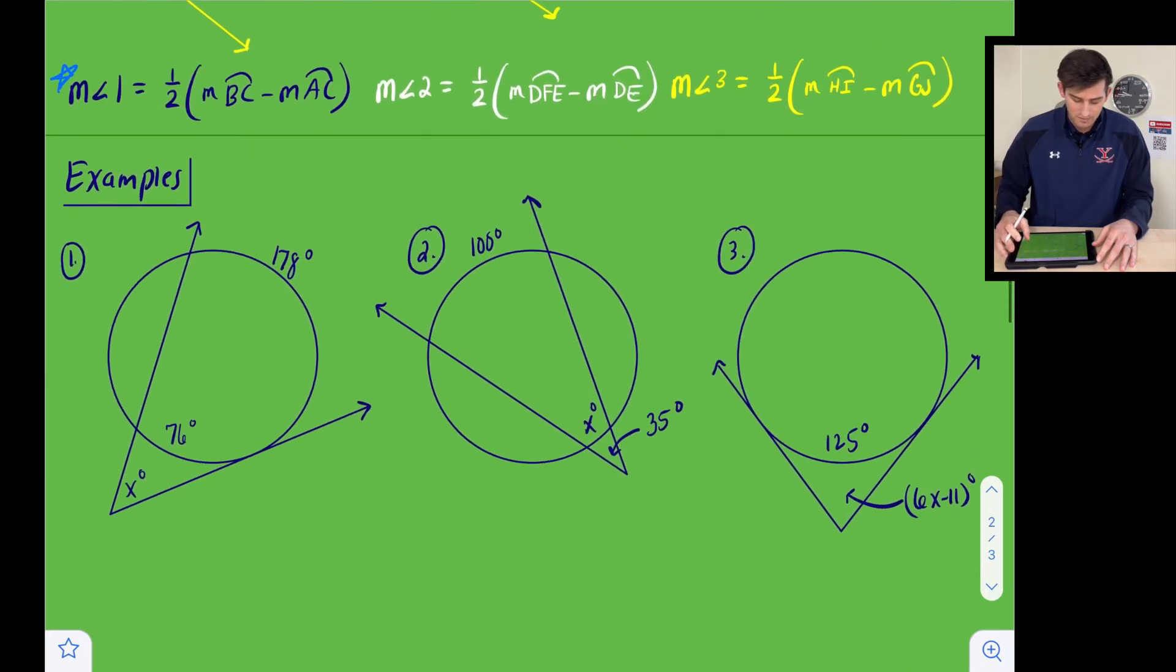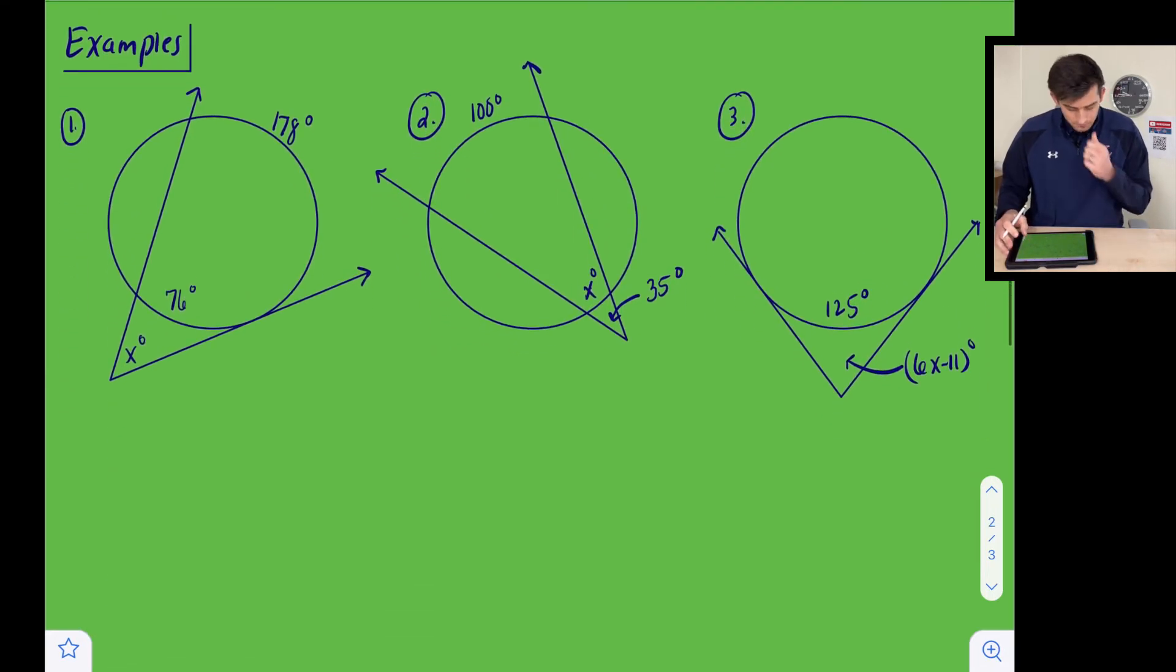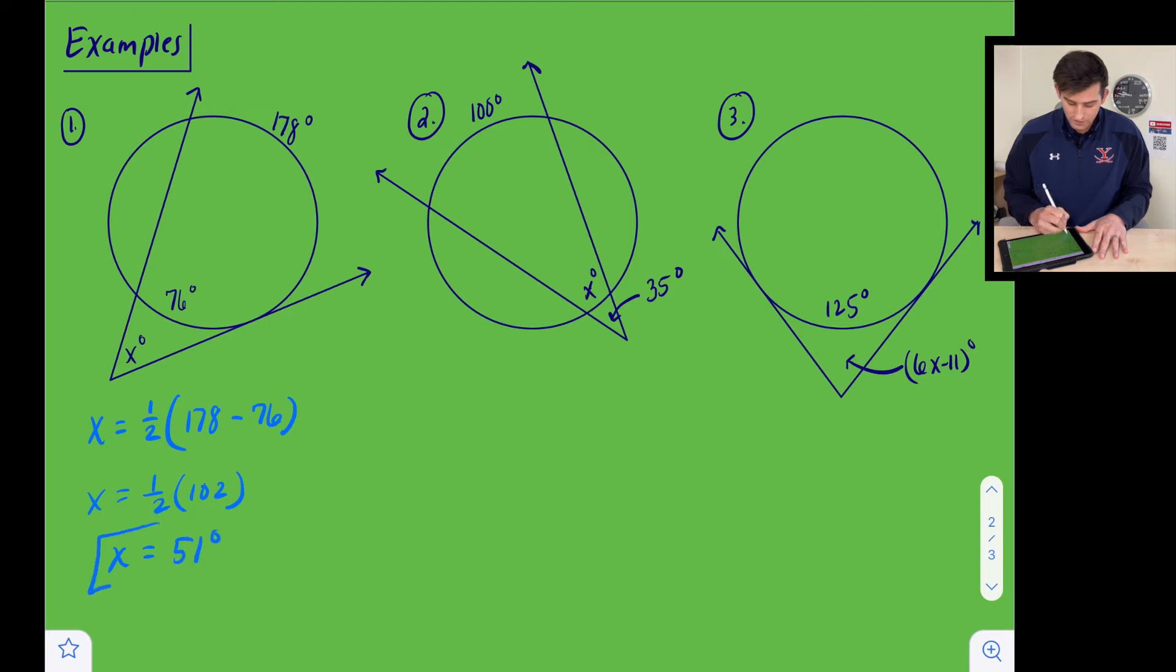All right, so let's look at a couple examples where we apply this theorem. So example one, pretty straightforward. We want to find what X is equal to. So we're just going to say X is equal to one half, and we're going to subtract the two intercepted arcs. So now we're going to do 178 minus 76, and that gives us 102. And now we're going to take half of 102. So we divide that by two, and we get X is equal to 51 degrees.